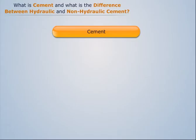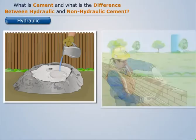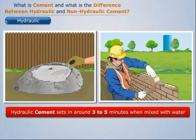Let's first see hydraulic cement. Hydraulic cement, when mixed with water, gets hardened because of chemical reactions that occur independently. Hydraulic cement sets in around 3 to 5 minutes when mixed with water.